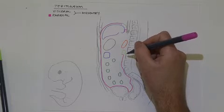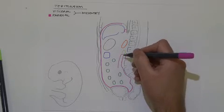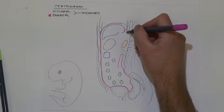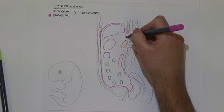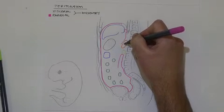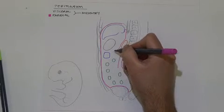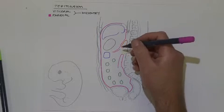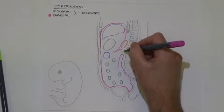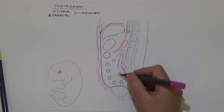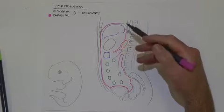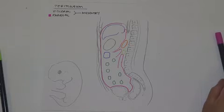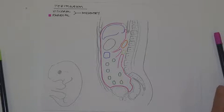The parietal peritoneum then wraps forward and gives an extension which comes downward. Coming back to the top, this layer comes down along the anterior aspect of the pancreas and then gives an extension off toward the transverse colon. It then comes back and wraps onto the front of the duodenum, giving an extension off toward the small intestine. These extensions of the parietal peritoneum are going toward contributing to the mesentery.